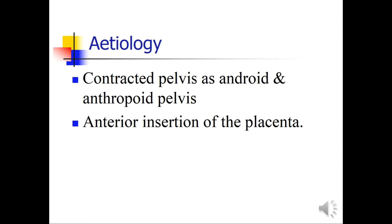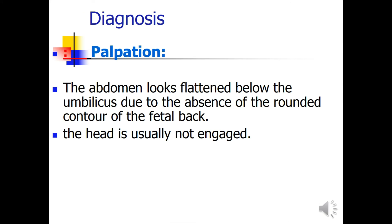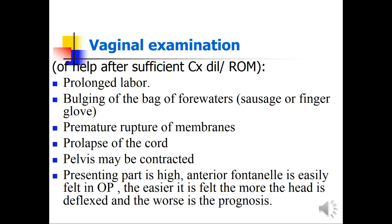Etiology includes contracted pelvis such as android and anthropoid pelvis, and anterior insertion of the placenta. Diagnosis by palpation: the abdomen looks flattened below the umbilicus due to the absence of the round contour of the fetal back, and the head is usually not engaged. On vaginal examination: prolonged labor, bulging of the forebag of waters, premature rupture of membranes, prolapse of the cord, and the pelvis may be contracted. The presenting part is high; the anterior fontanelle is easily felt in occipital posterior — the easier it is felt, the more the head is deflexed and the worse the prognosis.